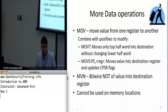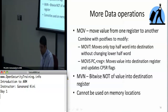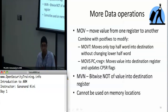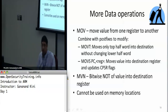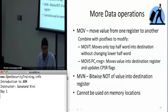There are two instructions you need to know for moving data from one register to another: MOV and MVN. What MOV does, just like it says, is it moves the value in one register into another register.